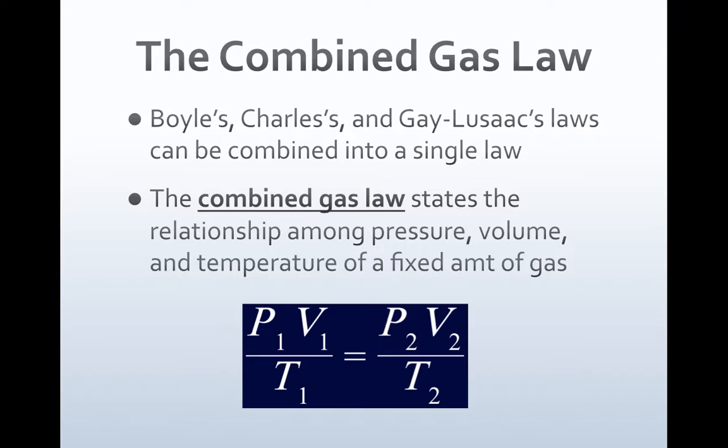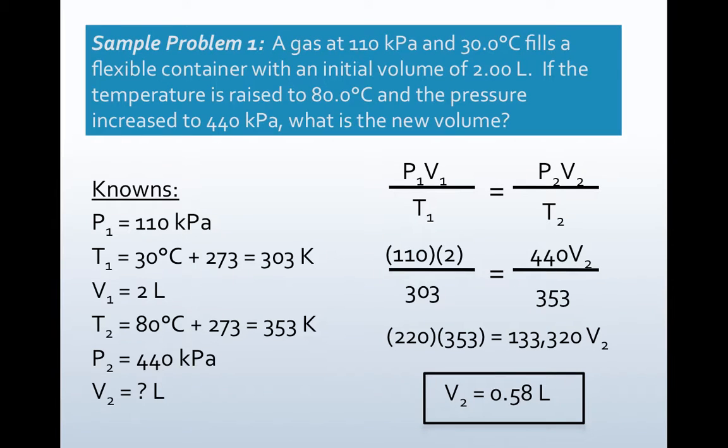Remember, the ones you can think of as the original, the twos as the new set of conditions. So if we look at a sample problem: a gas at 110 kPa and 30 degrees Celsius fills a flexible container with an initial volume of 2 liters. Putting things down as knowns on the left-hand side is really going to help you determine which formula you need. Notice I write the pressure 110 kPa, the temperature—and I take that 30 degrees and change it to Kelvin—and the volume, 2 liters.